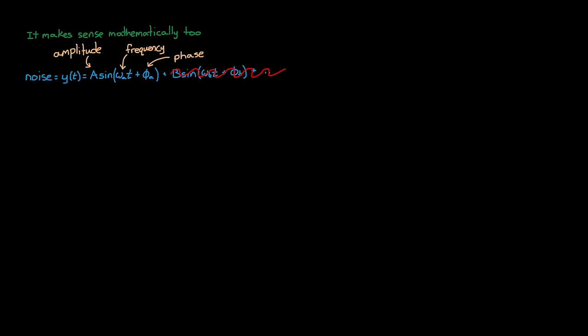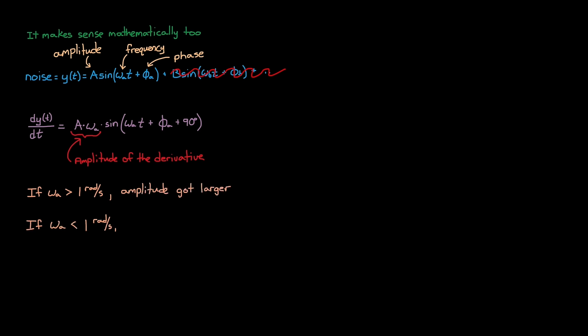And if we take the derivative of this sine wave, we get a new sine wave at the exact same frequency, but shifted in phase by 90 degrees, and with a new amplitude, a times omega a. And from here, it's easy to see that if omega a is greater than 1 radian per second, the amplitude got larger. And if omega a is less than 1 radian per second, the amplitude got smaller.